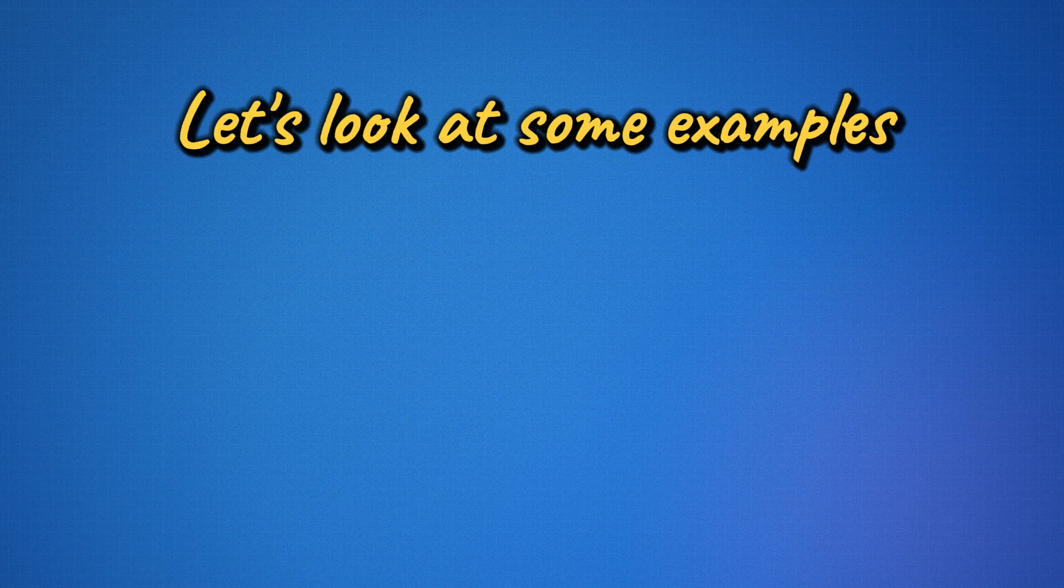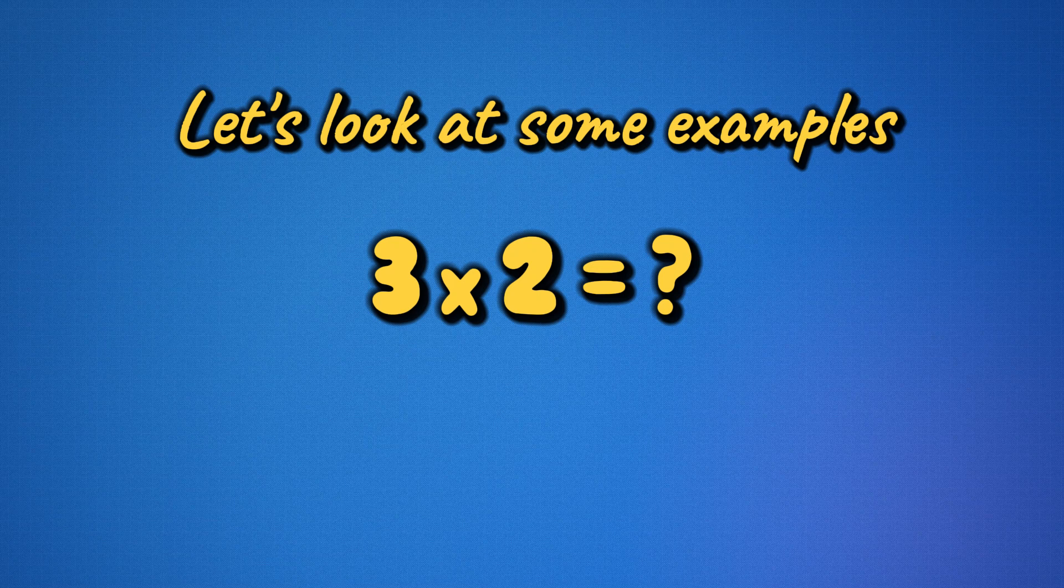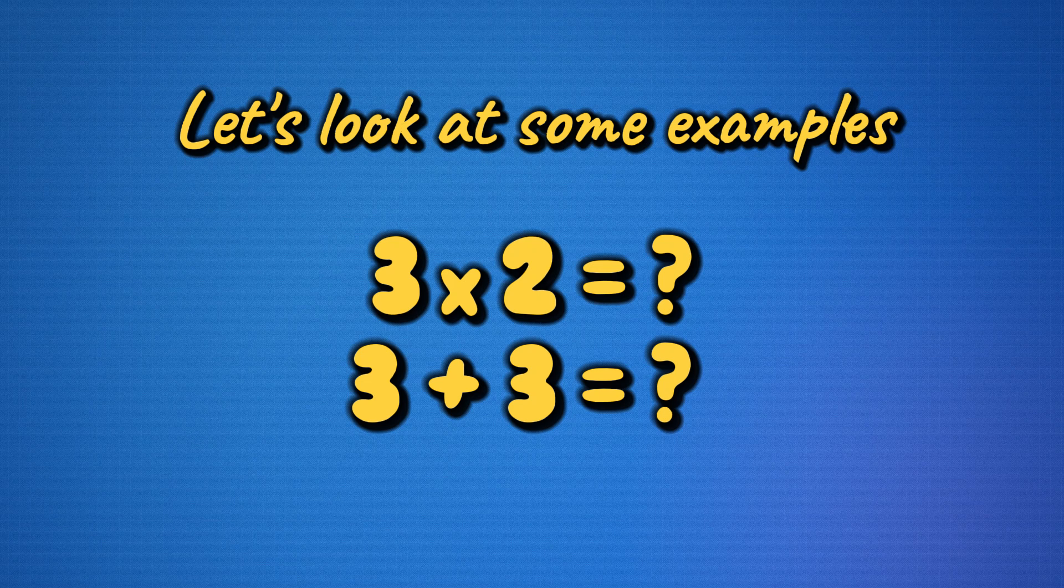Let's look at some examples. If we have three and multiply it by two, we can double the three to find the answer. To double it, just add three plus three. That gives us the answer of six. That means that three times two is also six.